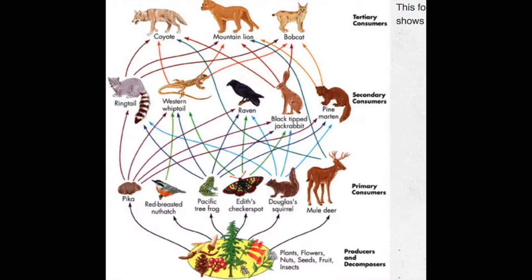The food web of some animals in the tropical dry forest: the sun is the primary producer that gives energy and life to the producers and decomposers. The arrows pointing towards the next level of consumers indicate that they are being eaten. Examples are that insects are producers, and primary consumers such as deer or squirrels eat the producers. Then secondary consumer ring-tailed lemur will eat the primary consumer squirrel.